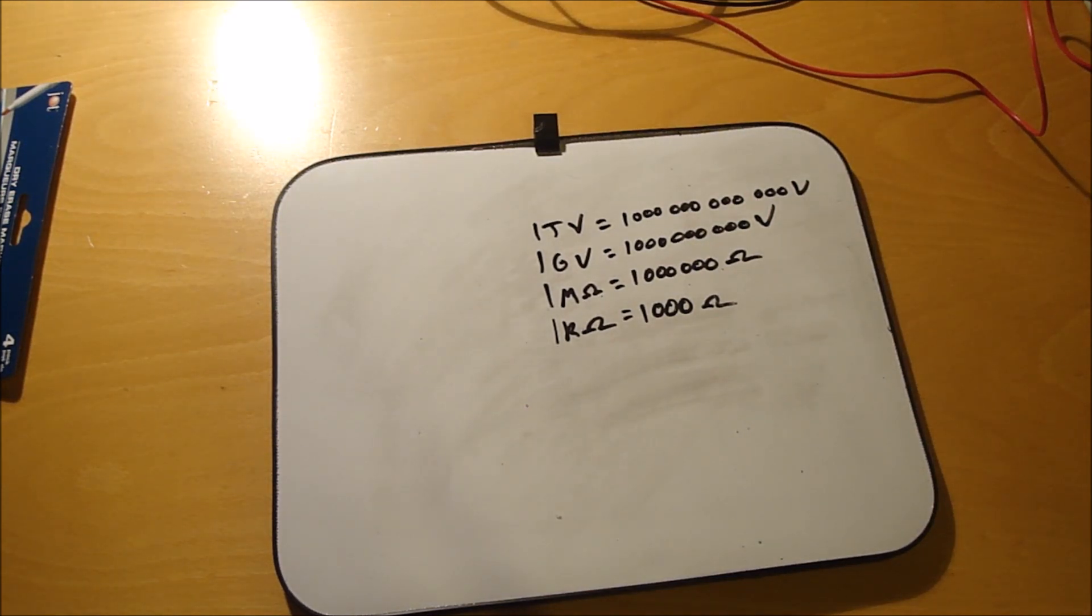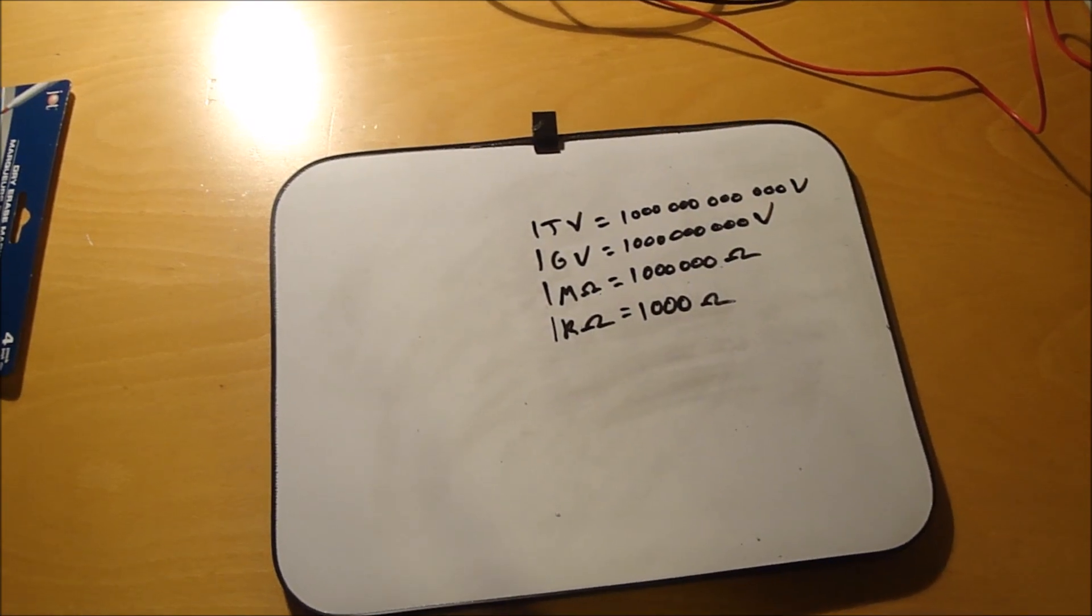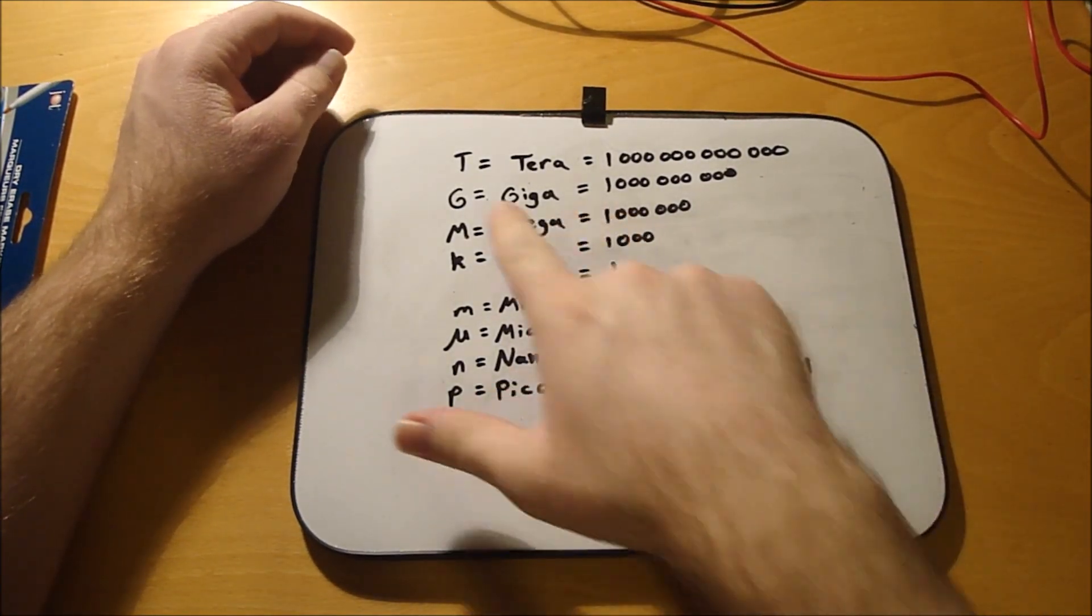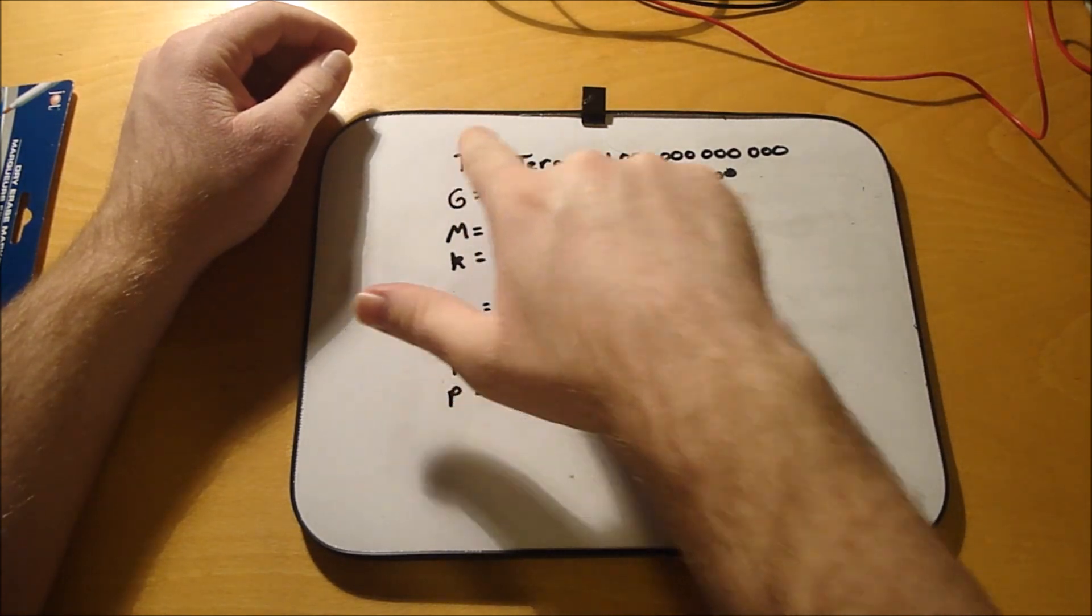So that's breaking down your values on how you move your decimal places in order to understand what those mean.